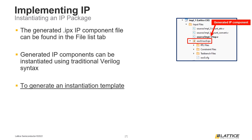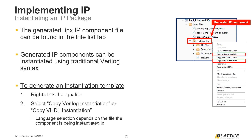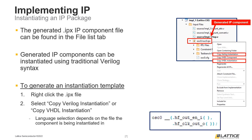To generate an instantiation template for an IP component, right-click the IP component file in the File List tab. From the drop-down that appears, select either of the copy instantiation options, depending on the language of the file you will be instantiating the component in. The Verilog instantiation template for the oscillator IP component can be seen in the figure at the bottom of the slide. The name of the component's module and its top-level ports are defined. Users will still have to define an instance name for their instantiation and will also have to define the port connections.